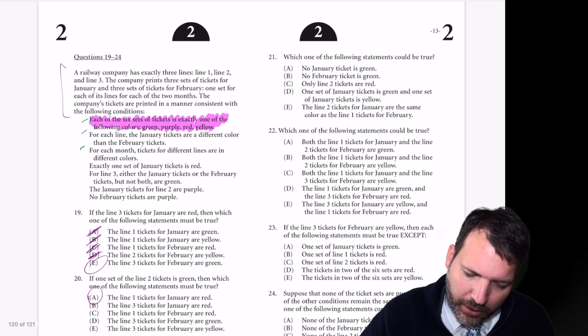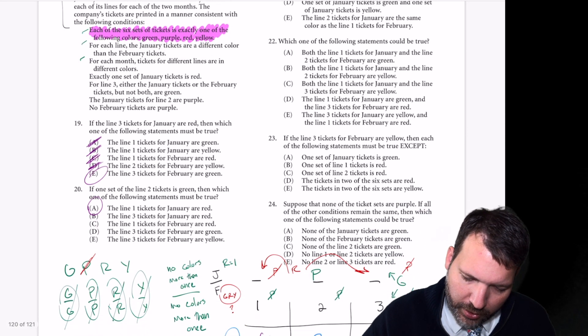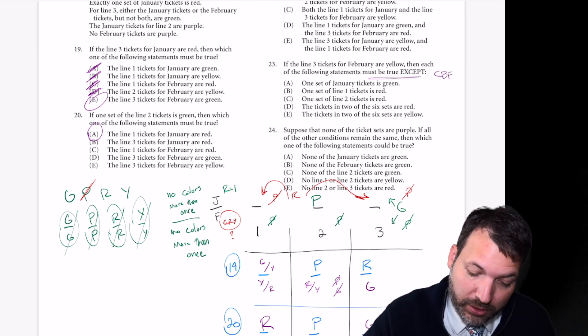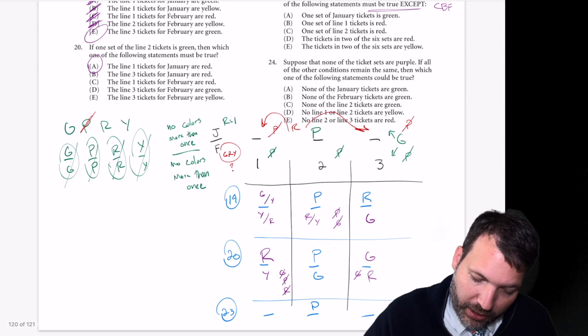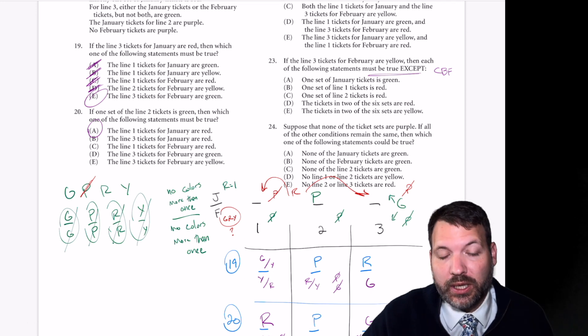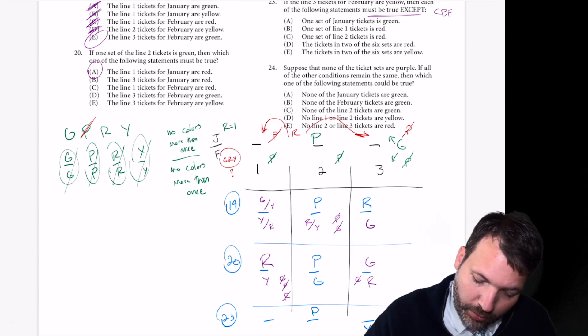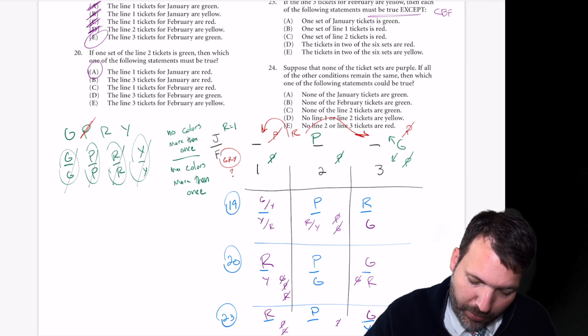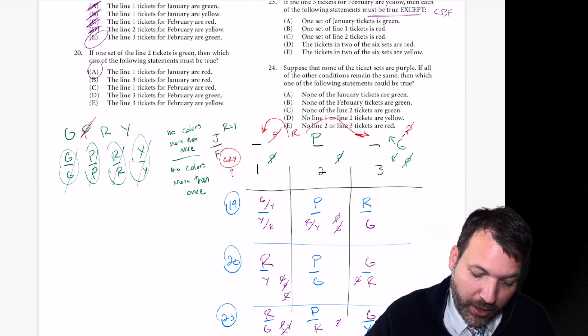Let's see, 21 and 22 general questions. 23, a must be true except. So remember, this is really the same thing as a could be false. If the line three tickets for February are yellow, each of the following statements must be true except. We know green has to go somewhere for line three, so that's going to have to be January. We know red has to go somewhere for January, so that's going to have to be line one. We know purple can't go anywhere. So this can't be purple. This can't be red. This can't be purple, can't be red, can't be yellow because we've already used yellow. So actually this has to be green. And the only thing left over is red.